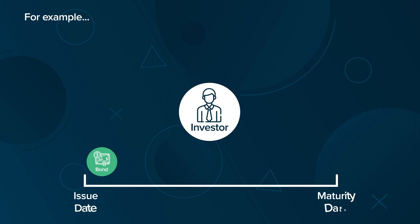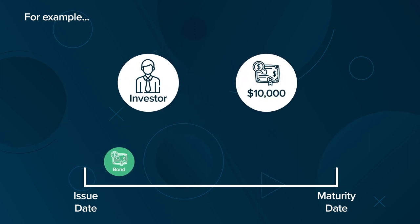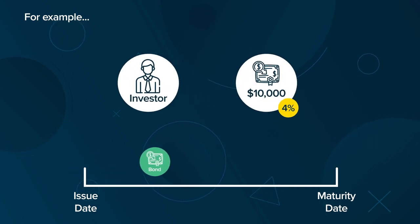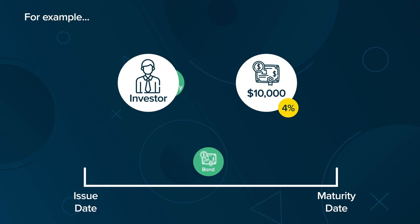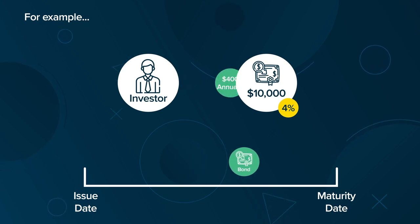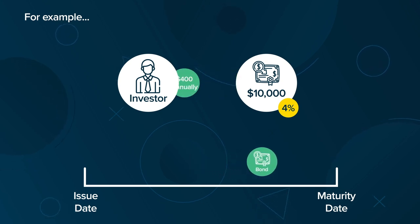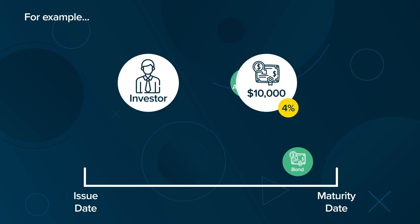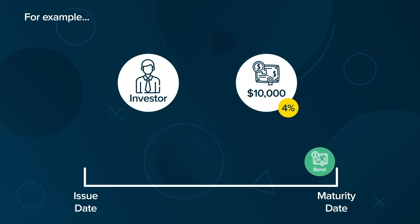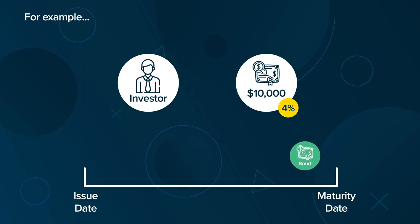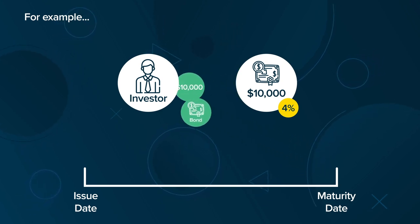For example, an investor purchases a $10,000 bond with a coupon rate of 4%. The bondholder will therefore earn interest payments of $400 annually, or 4% of $10,000, until the bond matures. On its maturity date, the bondholder will receive the $10,000 principal back.